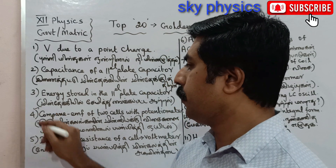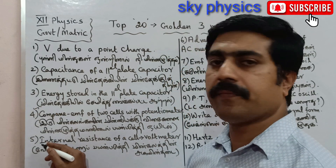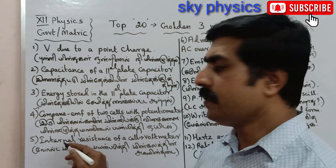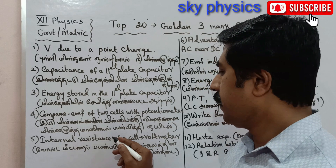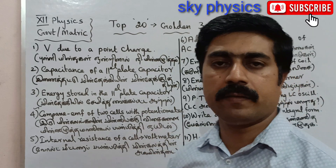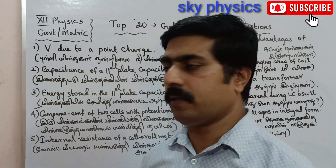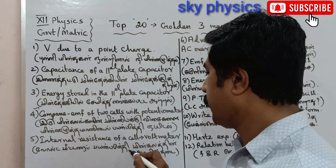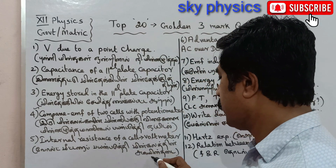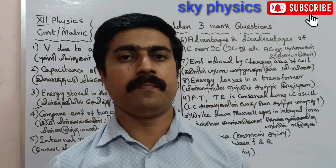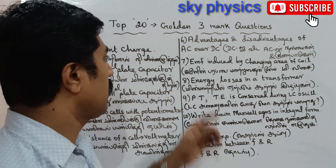5th question: Internal resistance of a cell using a voltmeter — a detailed question. (Tamil: Voltmeterai Payimbitutthi Minngalathin Agamintadayayi Kanakketal.)